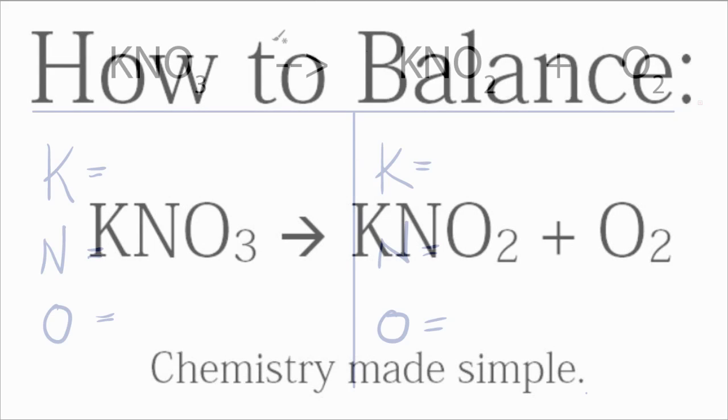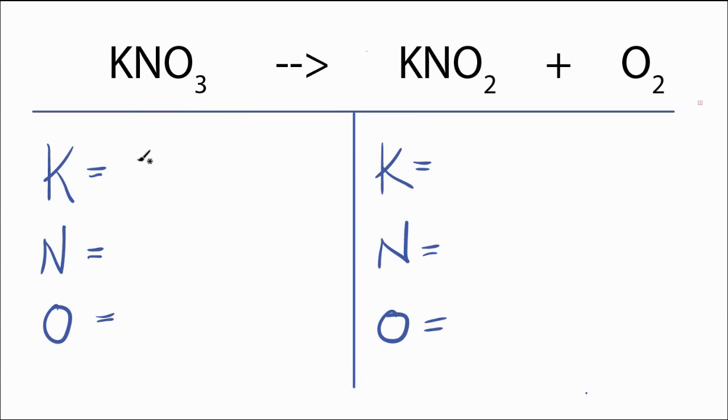Hi, this is Dr. B. Let's balance this equation. We have one potassium, one nitrogen, and three oxygens on the reactant side.